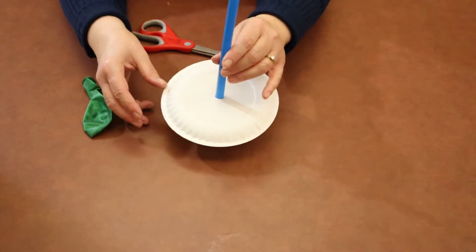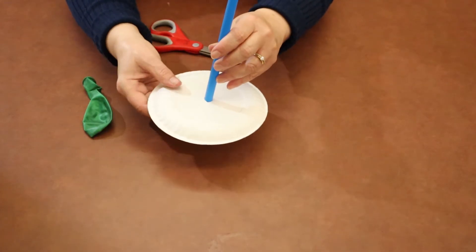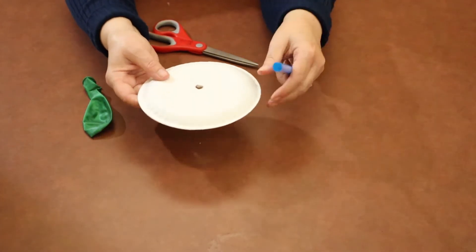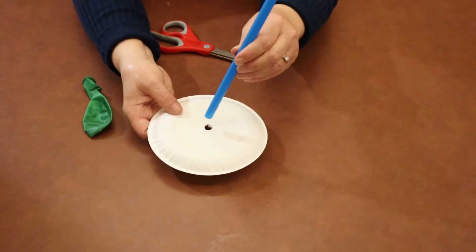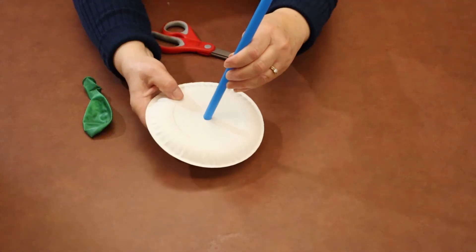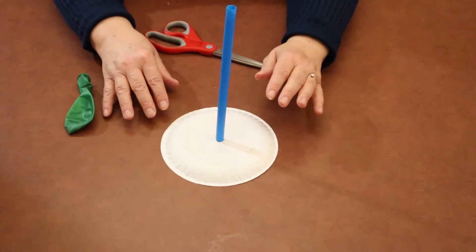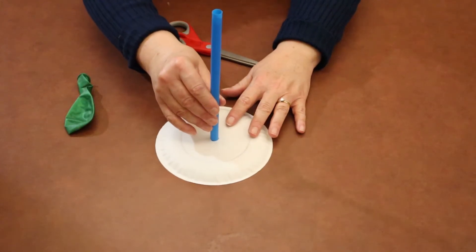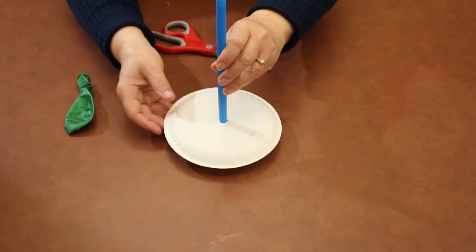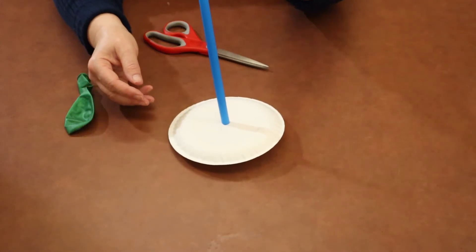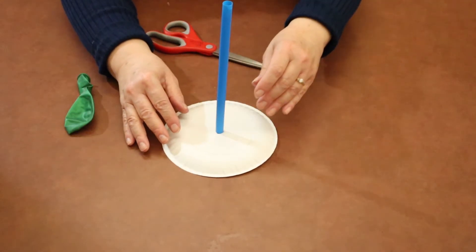The next step would be to take your straw and poke it through the plate. Make sure when you're doing this, you want your plate upside down. Stick it through the hole, then set the plate down on your surface and make sure that the straw is just barely touching the table. You don't want it through so far that the straw is on the table and not your plate.